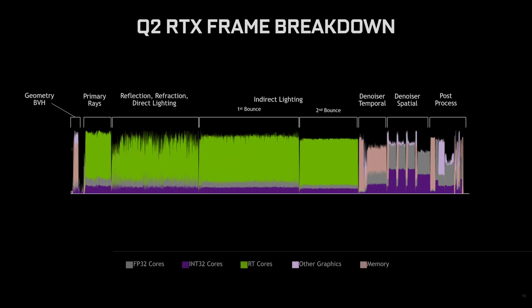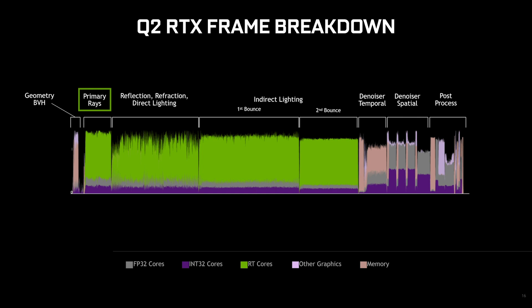What we have here is a deep dive into the actual workloads being computed on the GPU. The first step is constructing the bounding volume hierarchy — an acceleration structure where you take the raw geometry from the scene and put it into a form that's efficient for ray tracing. The second step is to compute the primary rays, and you can see this is not a huge workload on the scene — this is something that could be done in rasterization, but we've chosen to do it in our pure path tracer.